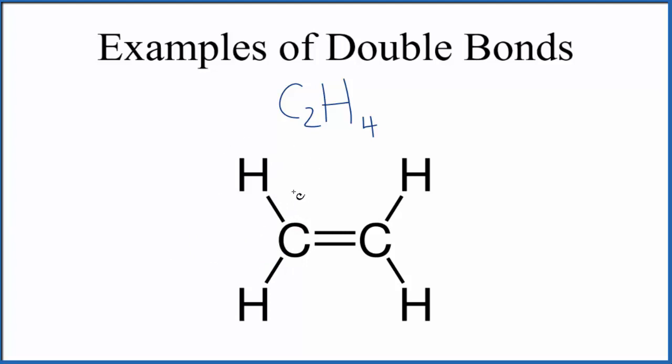Hydrogens only need two electrons to have their outer shell full. So the hydrogens are all good. They have their two electrons. And then each carbon atom, this one here, has 2, 4, 6, 8, an octet.